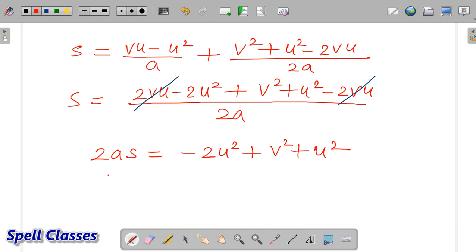What remains: minus 2u square plus v square leaves minus u square. Shift the negative u square to the left hand side, so we get u square plus 2as equals v square.